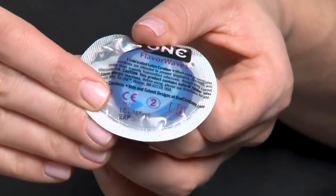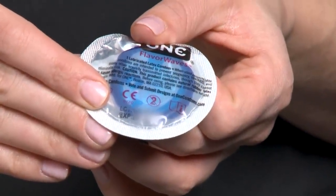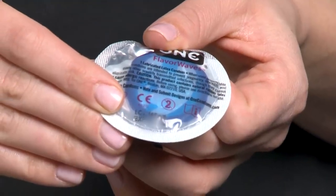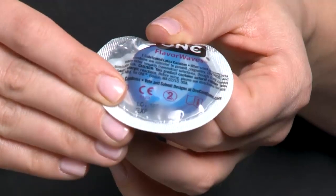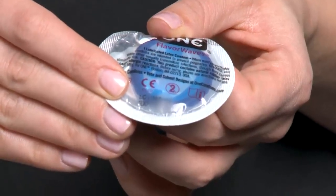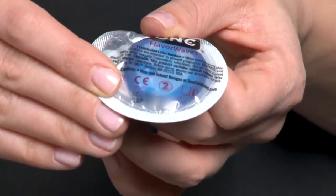Before using a condom, there are two things to check. The first is the expiry date. Condoms break down over time. Check the expiry date printed on the condom package or on the box. This one has not expired yet, so it would be good to use today.